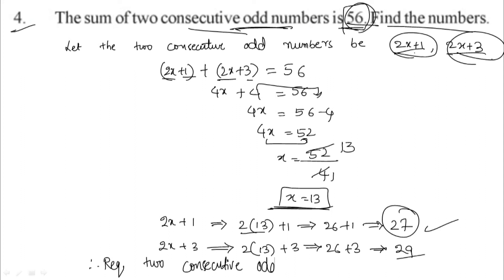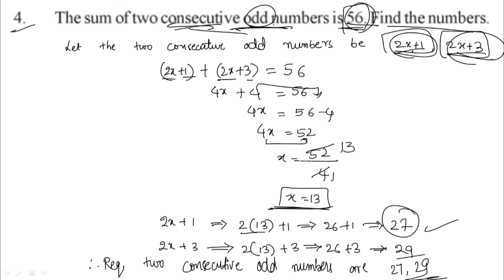The 2 consecutive odd numbers are 27 and 29. These are consecutive odd numbers since they are back to back odd numbers. We took them as 2x plus 1 and 2x plus 3. Questions 5, 6, and 7 will be discussed in the next video.